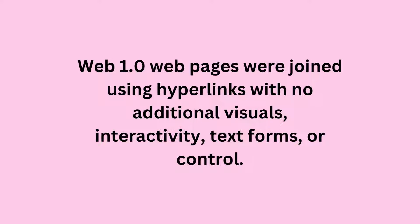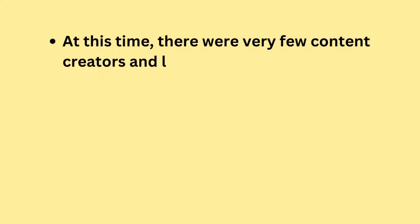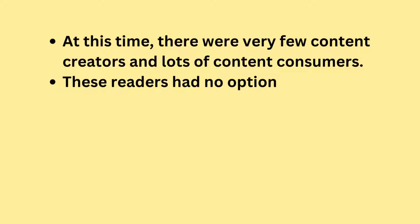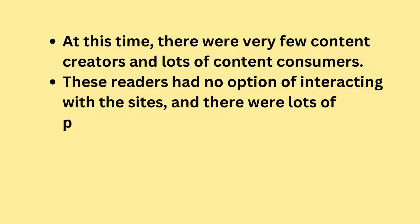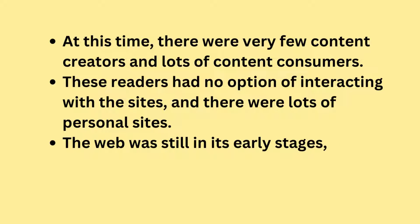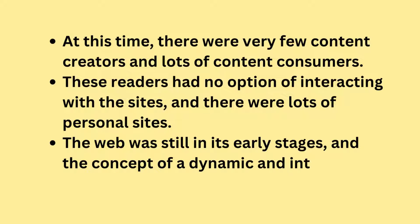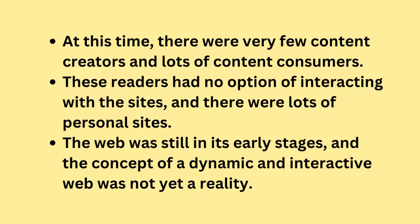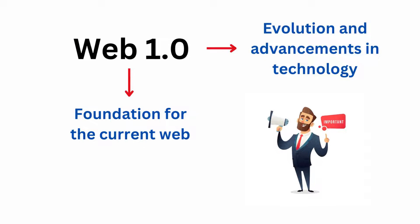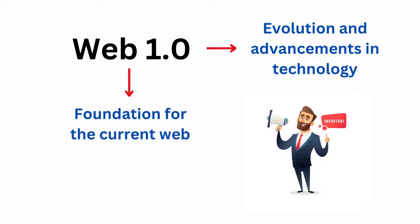Unlike the web we see today, Web 1.0 web pages were joined using hyperlinks with no additional visuals, interactivity, text forms, or control. At this time, there were very few content creators and lots of content consumers. These readers had no option of interacting with the sites, and there were lots of personal sites. The web was still in its early stages, and the concept of a dynamic and interactive web was not yet a reality. It's important to understand Web 1 because it serves as the foundation for the current web and highlights the evolution and advancements in technology over the past few decades.